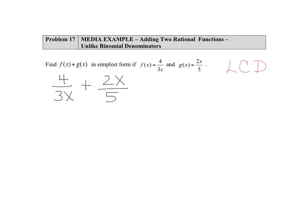So our denominators are 3x and 5. Now remember that in a least common denominator, you need to have all the factors of the denominators represented without repetition.